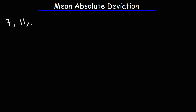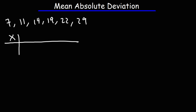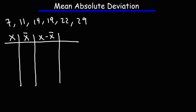Now let's talk about how to calculate it. Let's say we have the numbers 7, 11, 14, 19, 22, and 29. In this first example, let's use a table to calculate the mean absolute deviation. In the first column I'm going to put all of the x values, then the mean which we need to calculate, then the difference of each data point with the mean, and then the absolute difference of each data point with the mean.